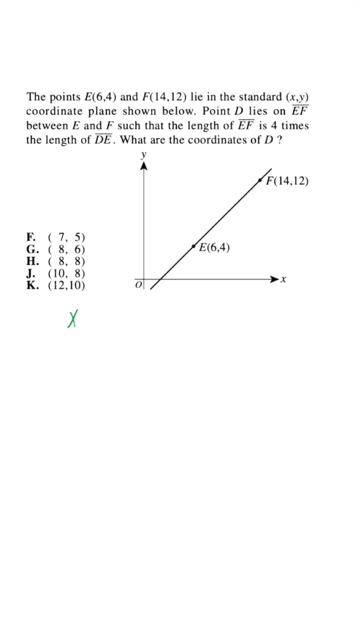So we have X of P is equal to X sub 1 plus A over A plus B times X2 minus X1. And what we have to understand is that we're going to be using these ordered pairs, and when we substitute, this is the correct substitution we want.